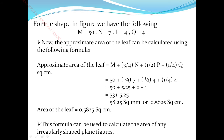The approximate area of the leaf is calculated using the formula: Area = M + (3/4)×N + (1/2)×P + (1/4)×Q. Substituting the values: 15 + (3/4)×7 + (1/2)×4 + (1/4)×4. For (3/4)×7: three times seven is 21, divided by four gives 5.25. For (1/2)×4 you get 2, and (1/4)×4 gives 1.